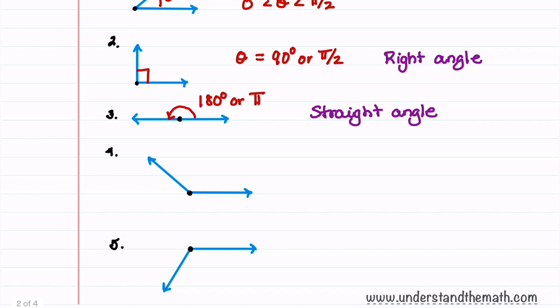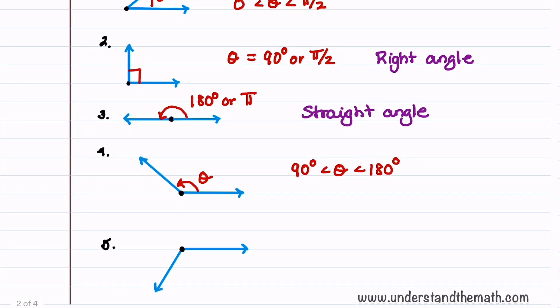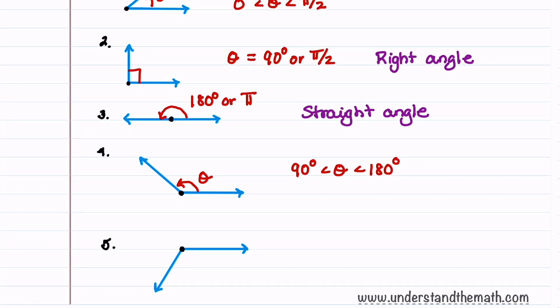Our fourth angle we're going to notate as theta, and we'll restrict theta to be between 90 degrees and 180 degrees. So in radian notation, we'll say that pi over 2 is less than theta is less than pi. And if we have an angle of those dimensions, then we say this angle is an obtuse angle.